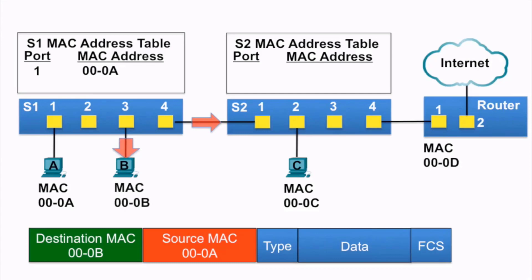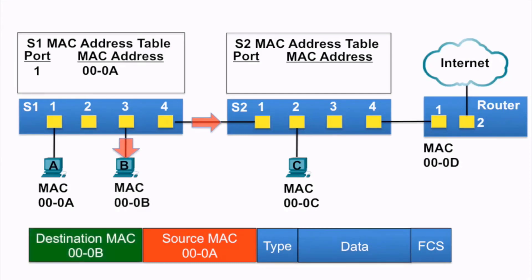PCB receives the Ethernet frame, examines the destination MAC address against its own MAC address, and notices that that is a match, and receives the rest of the frame.